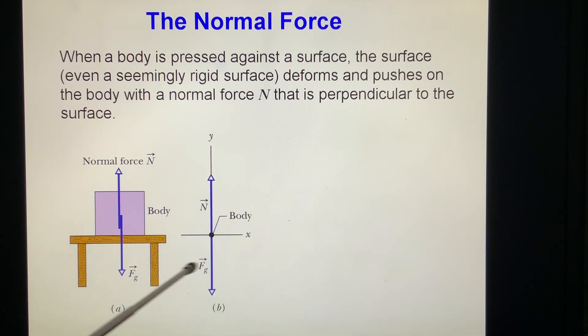We write the free body diagram on this body. Two forces acting on it. One is gravitational force, one is normal force. And these two forces equal in magnitude, opposite in direction. So this body is balanced. Sigma F equal to zero, it's at rest.